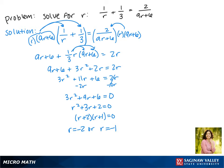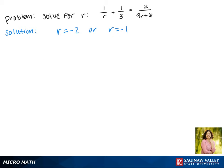Now we need to check to see if either of these solutions are going to be extraneous, and we do that by plugging it back into our equation. So everywhere we see an r, we're going to plug back in a negative 2 here.